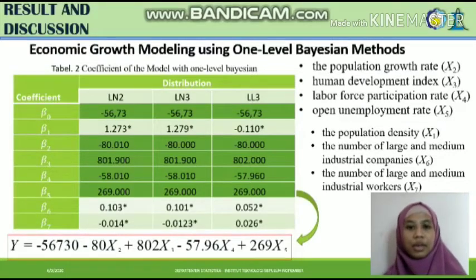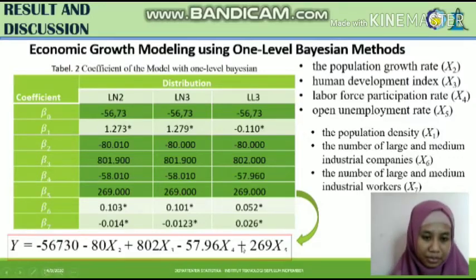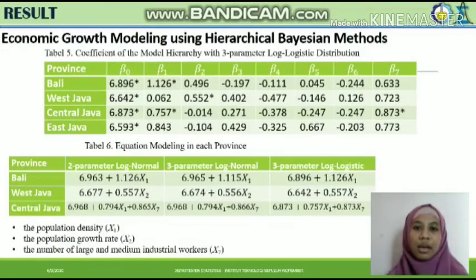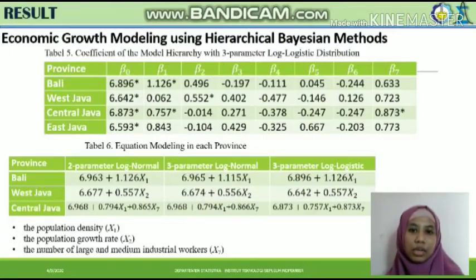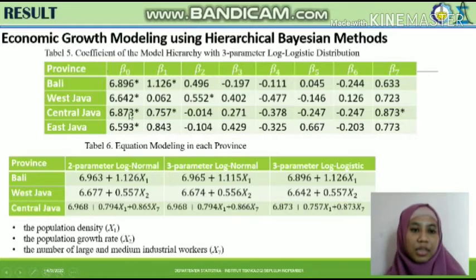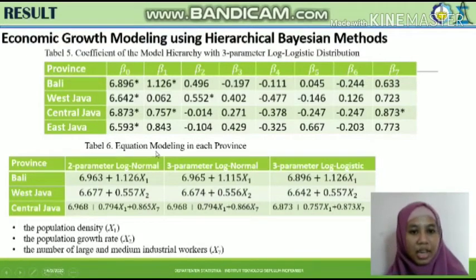After comparing the three distributional patterns, we find the best one-level model uses the three-parameter log-logistic distribution. We then model using the hierarchical Bayesian method. Tables three, four, and five show results for two-parameter log-normal, three-parameter log-normal, and three-parameter log-logistic distributions respectively. From the hierarchical Bayesian modeling at the micro level, we get 32 coefficients. Across all three distributions, all intercepts are significant, so we conclude that there are different values of district transactions in each province.